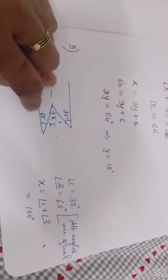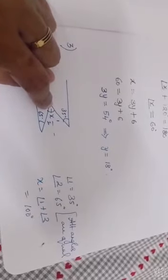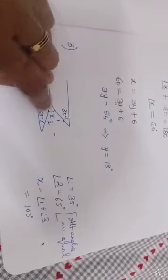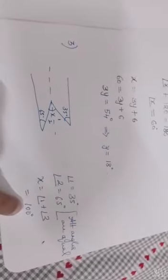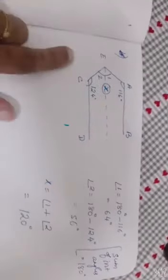Similarly, 2 and 65 are equal, alternate angle. X is the sum of 1 and 2. After finding 1 and 2, you can add and find the value of x, which will be equal to 100 degrees.